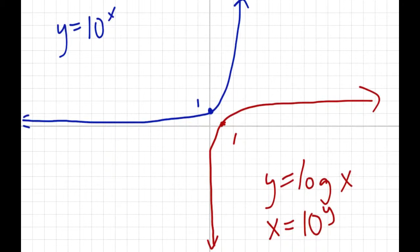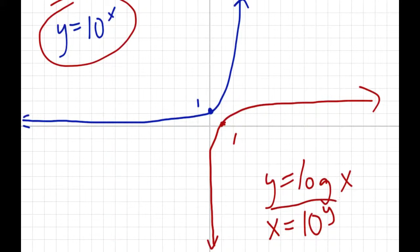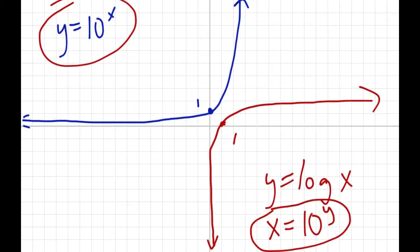If you compare the two graphs — the original blue one, y equals 10 to the x, and the new red one, x equals 10 to the y — you can see they're basically the same equation, just with x and y trading spots. Because of that, we can always convert from one equation to the other.